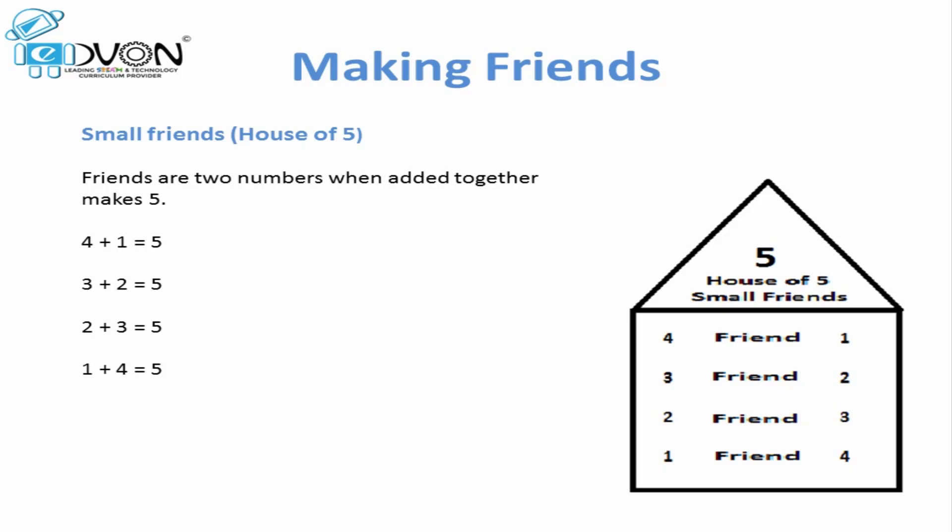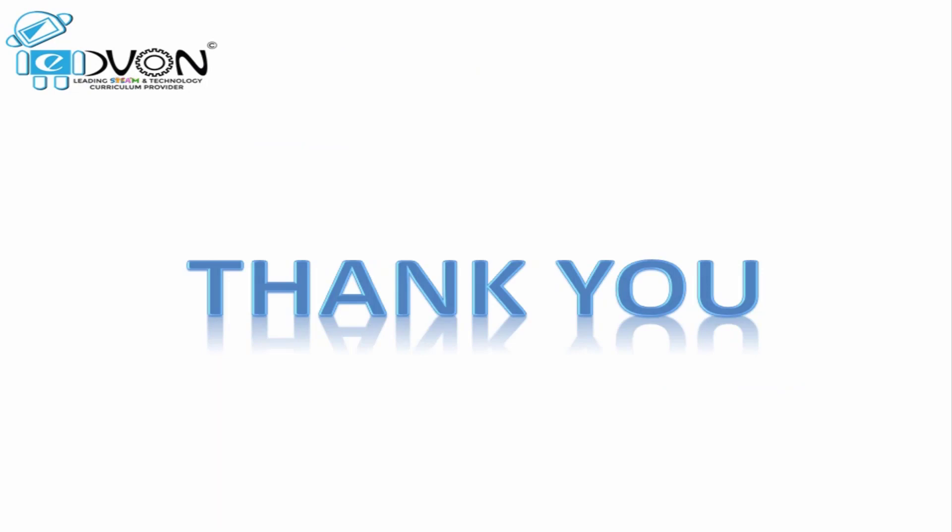Friend of four is one, friend of three is two, friend of two is three, and friend of one is four. In this video we have learned about friends — what are friends, what is the concept of small friends on abacus, and how friends are made. Hopefully the concept of friends is clear to everyone. Thank you for watching the video.